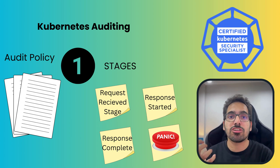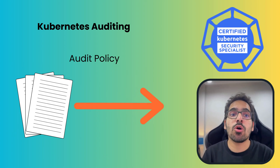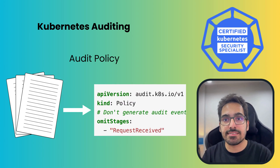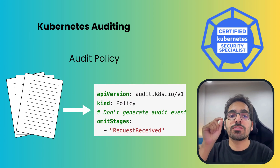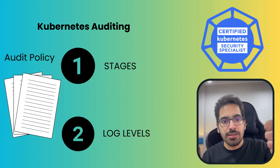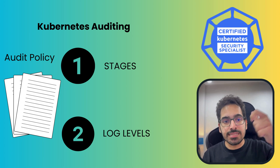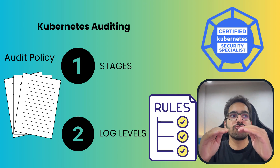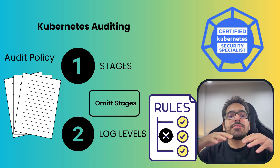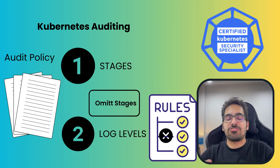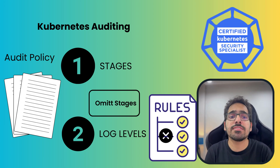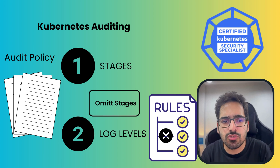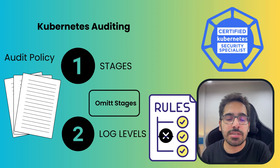Oftentimes you do not require to audit all the stages. In your audit policy file you can define omit stages for a particular resource. You define the log level in that rule — we'll come to the levels — and for that you can omit a particular stage. The three main things in the audit policy file are the log level, omit stages, and the resource.